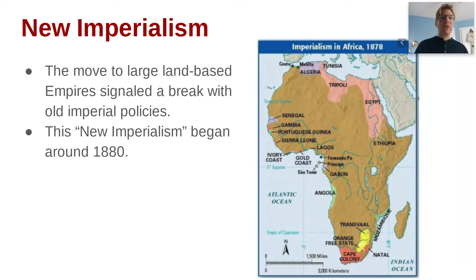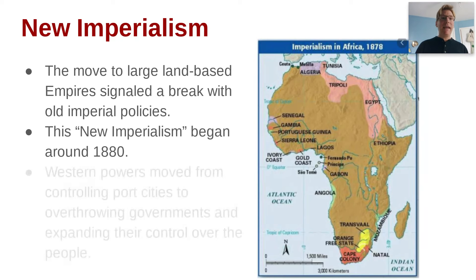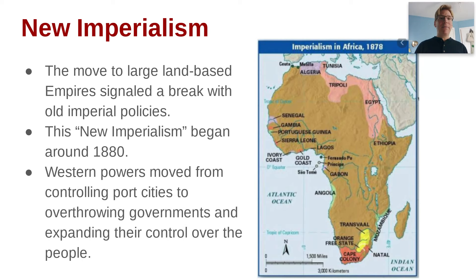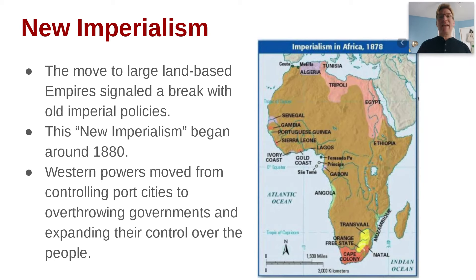This new imperialism begins around 1880, and Western powers move from just controlling port cities to overthrowing governments, expanding their control over the people and the land, and really governing directly or indirectly throughout entire nations.